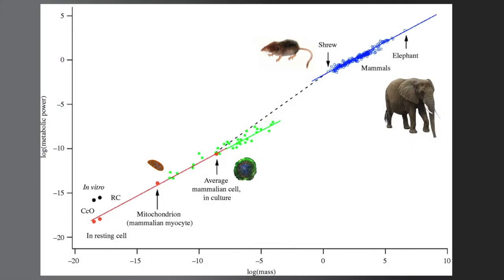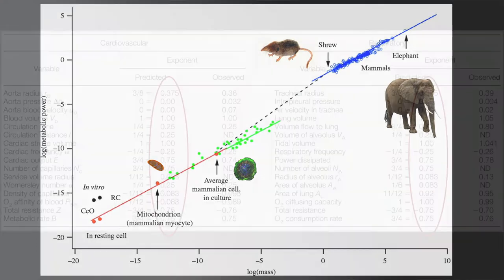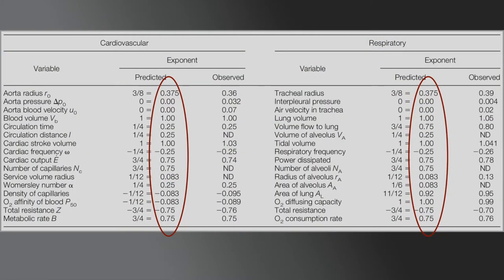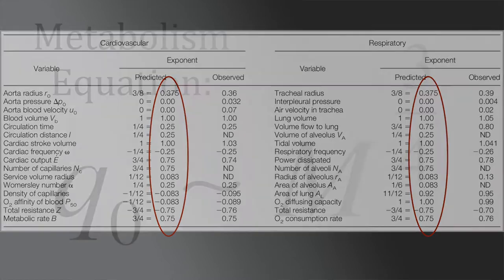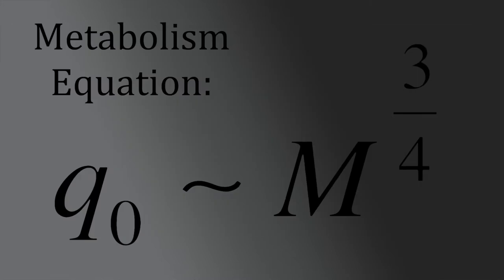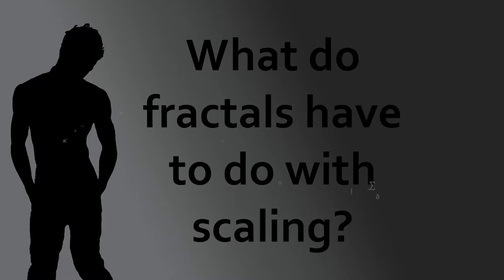This was a pattern noted by Max Kleiber way back in the 1930s. A big question has always been: why do organismal rates and times actually scale with these exponents that seem to cluster around what we call quarter powers? The three-over-four scaling is a classic example of that.